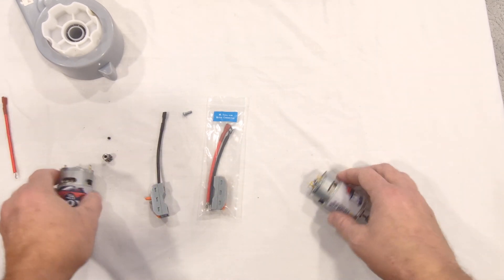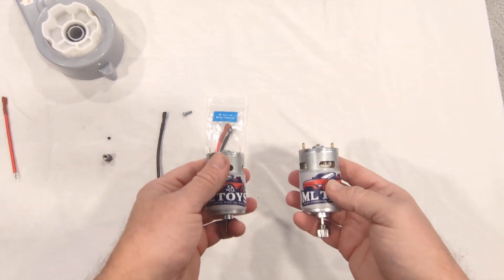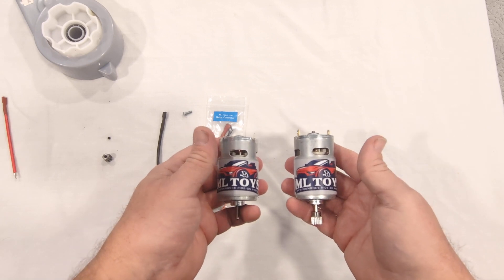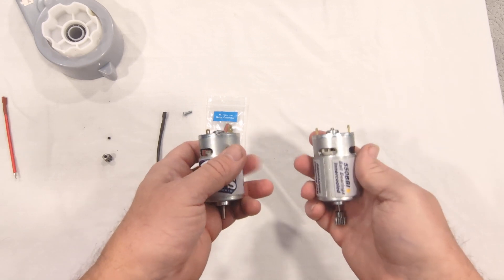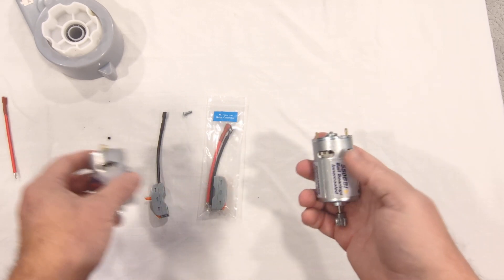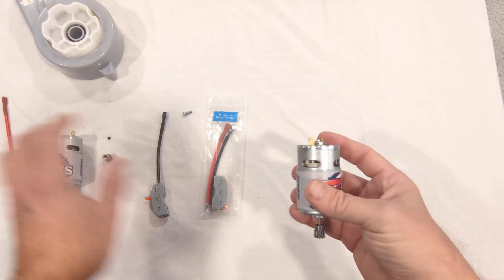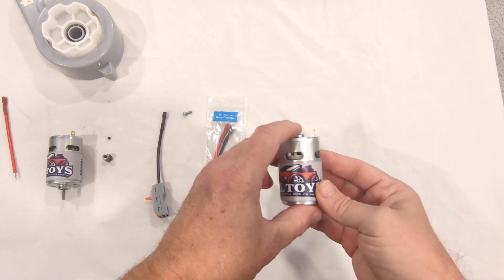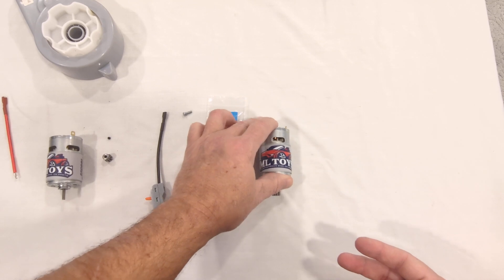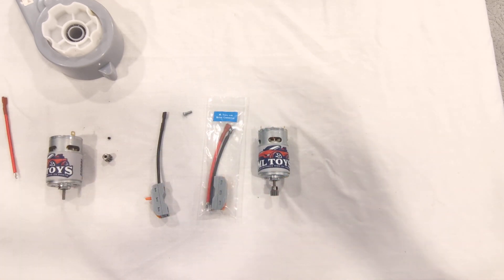And that's all it takes to put in the ML Toys Stage 1 Motor Kit. You can run these motors on 12 volts or 18 volts. If you're running 18 volt, we have an SLA battery upgrade. If you want to use lithium batteries, we do have a proper lithium upgrade kit for it. Another innovation from ML Toys.